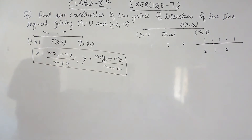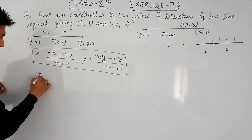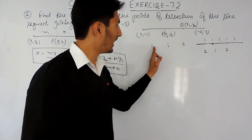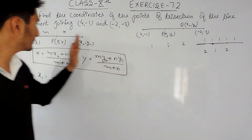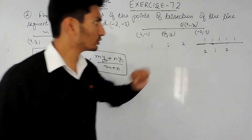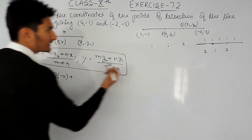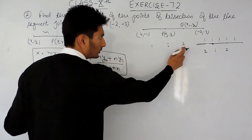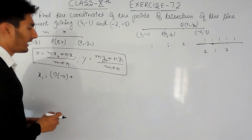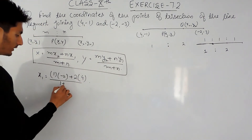Now to find the coordinate of point P, which divides the line in ratio 1:2, so m = 1 and n = 2. To find the x-coordinate, I multiply m with x2: our x2 is -2, so 1 multiplied by -2, plus n multiplied by x1, so 2 multiplied by 4, and in the denominator it should be m + n, that is 1 + 2.